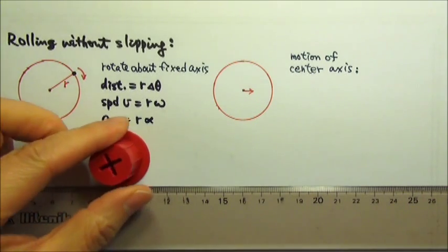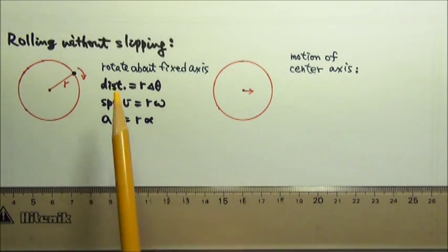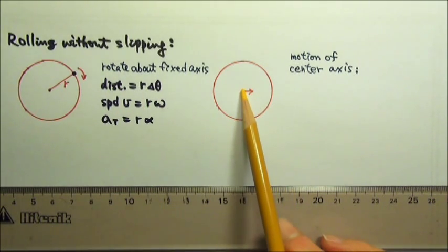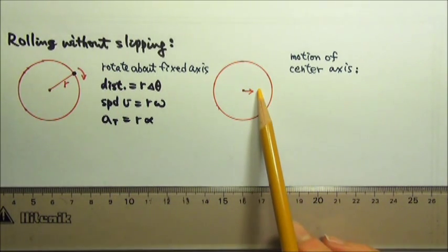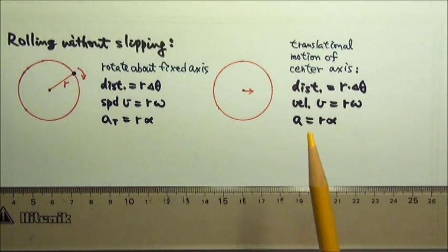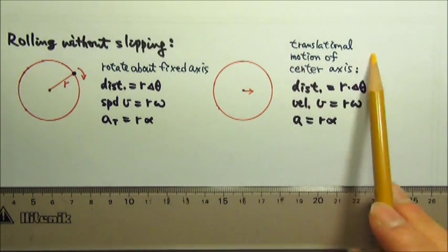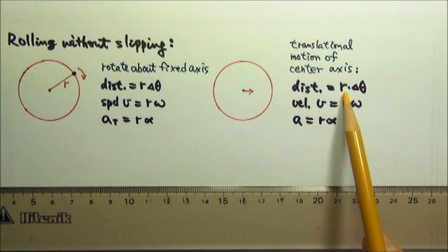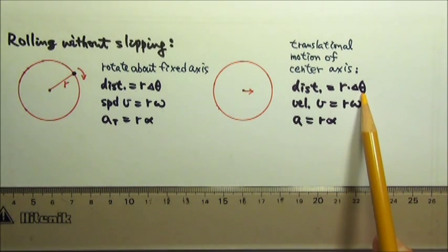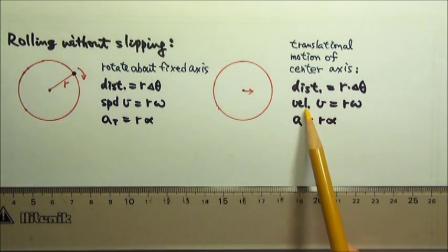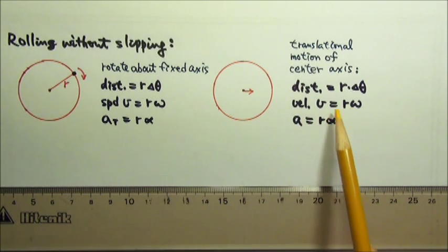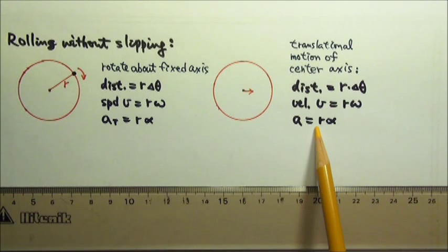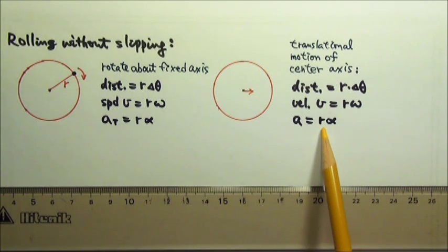Because the object rolls without slipping, the distance traveled by a point on the rim also equals the distance traveled by the center axis. So if we look at the translational motion of the center axis, we have: distance equals r delta theta, the speed of the center axis equals r omega, and the acceleration of the center axis equals r alpha.